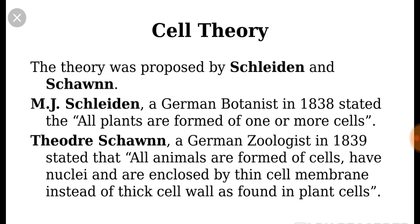Schleiden in 1838 studied cells in plants, and Schwann in 1839 studied cells in animals. Schleiden stated that all plants are formed of one or more cells. Schwann stated that all animals are formed of cells having nuclei, which are enclosed by a thin cell membrane instead of a thick cell wall, since cell wall is found only in plants.